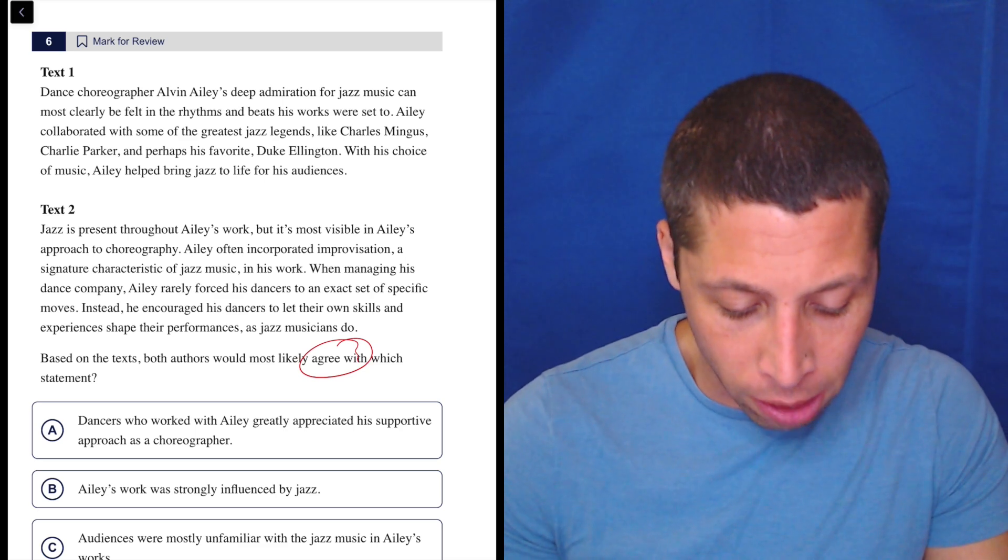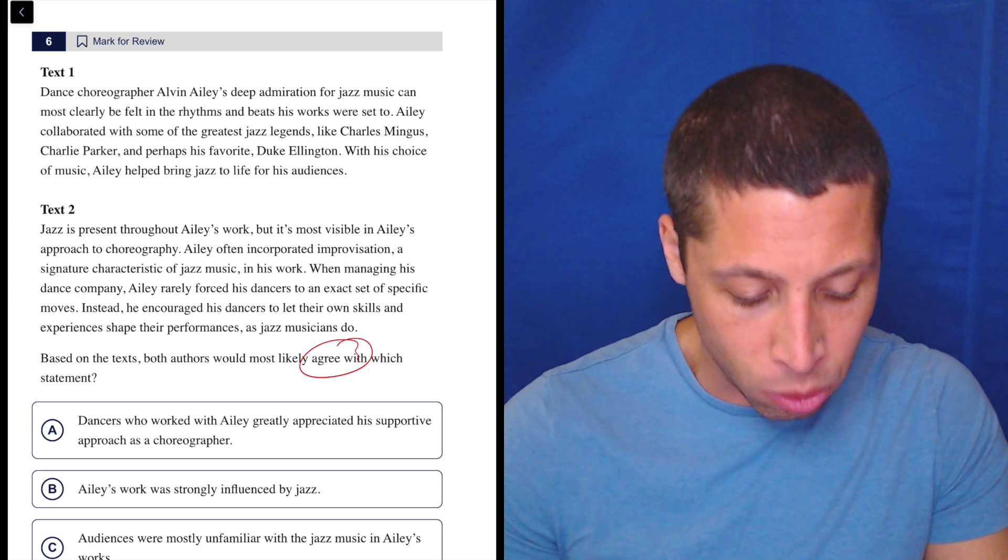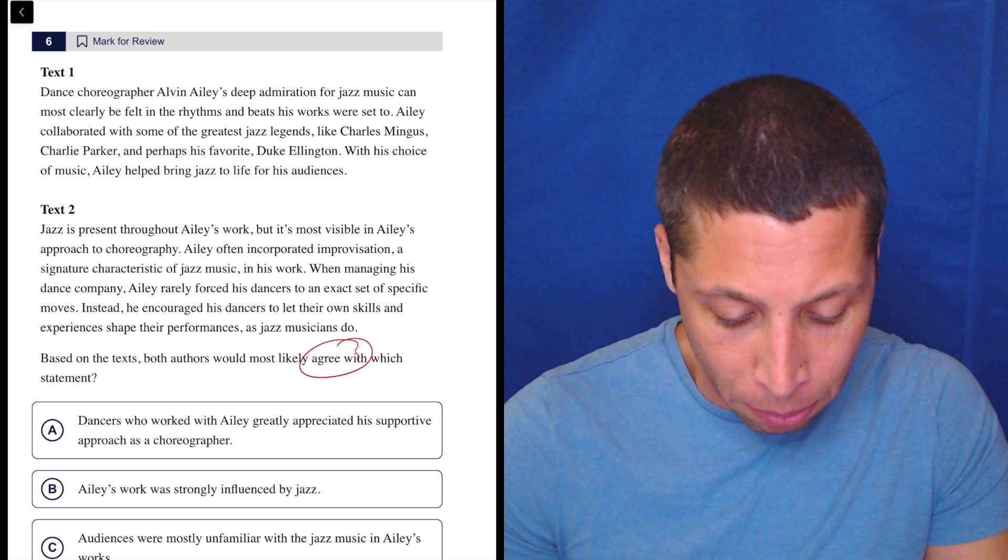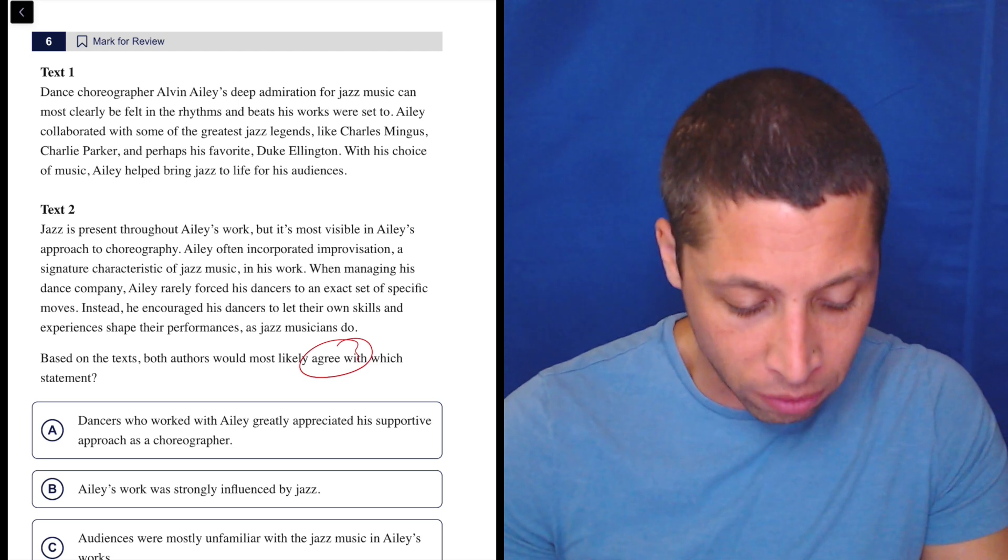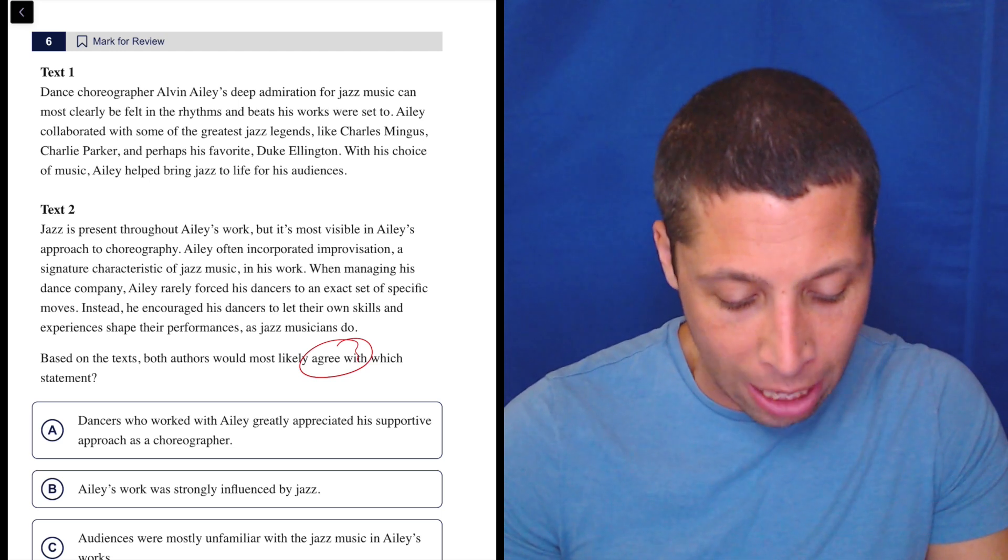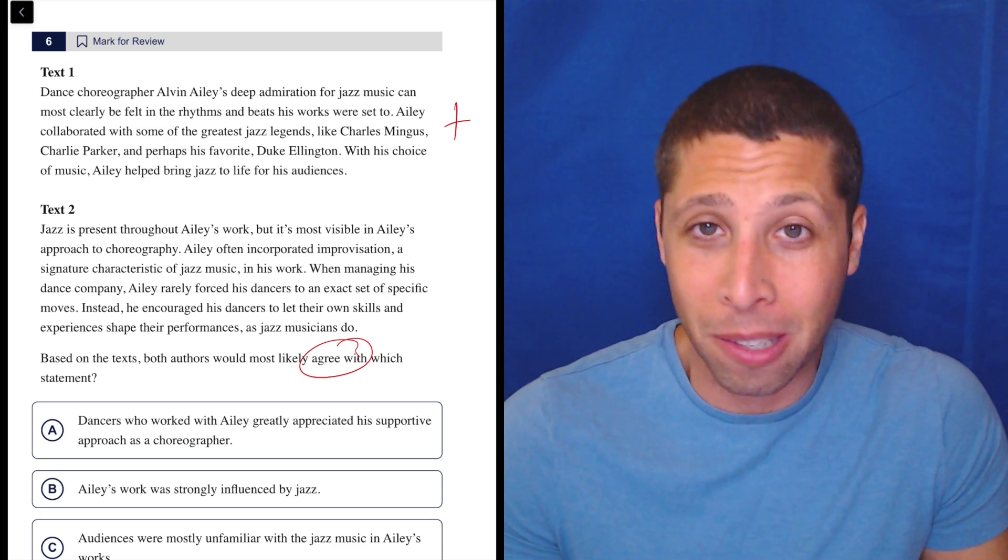Text one: dance choreographer Alvin Ailey's deep admiration for jazz music can most clearly be felt in the rhythms and beats his works were set to. Ailey collaborated with some of the greatest jazz legends like Charles Mingus, Charlie Parker, and perhaps his favorite Duke Ellington. With his choice of music, Ailey helped bring jazz to life for his audience. Okay, positive on Ailey.